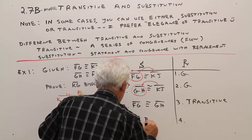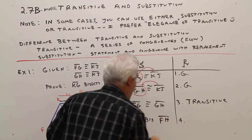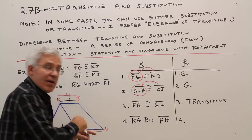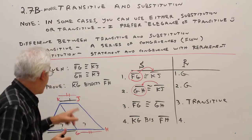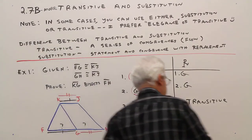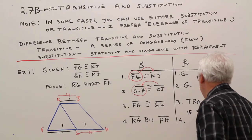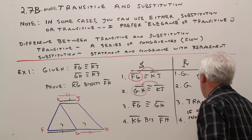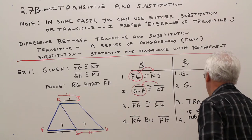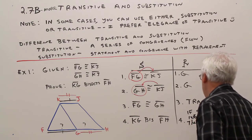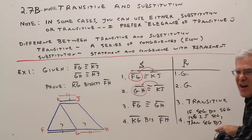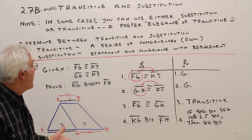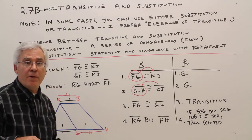If KG bisects FH, now I want you to use the if-then statement. If a segment divides a segment into two congruent segments, then it's a segment bisector. If above stuff, then below stuff. So a lot of words there. There you have it, a very simple proof using the transitive property of congruence.